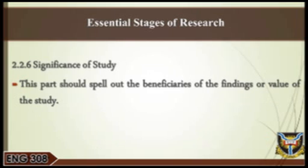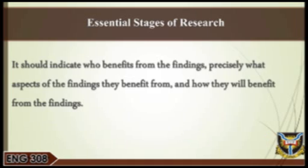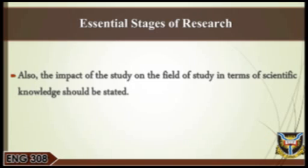Significance of study. This part should spell out the beneficiaries of the findings and the value of the study. It should indicate who benefits from the findings, precisely what aspect of the findings they benefit from, and how they will benefit from the findings. Also, the impact of the study on the field of study in terms of scientific knowledge should be stated. The researcher may go further to state whether the study is a baseline research or an original contribution.